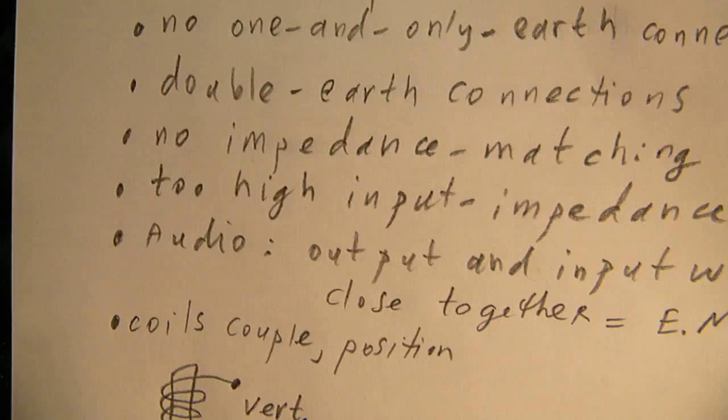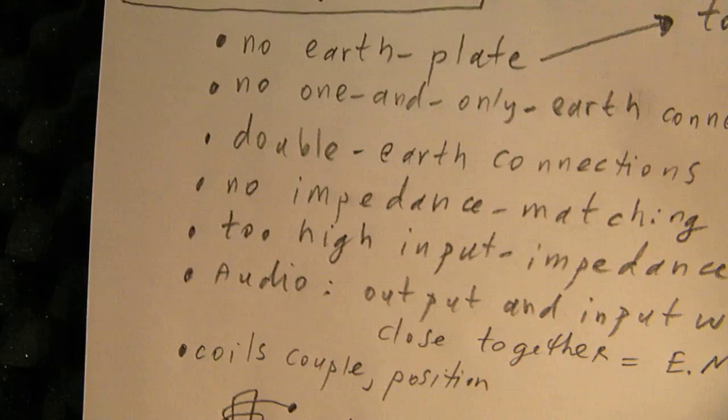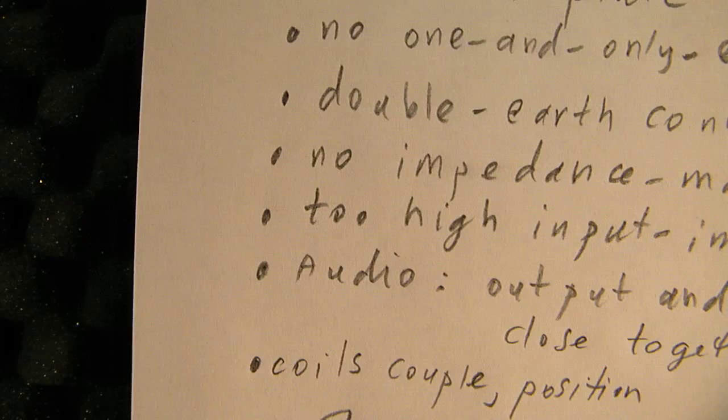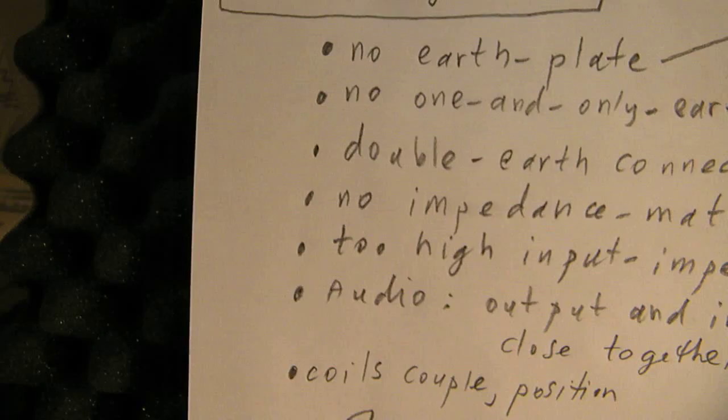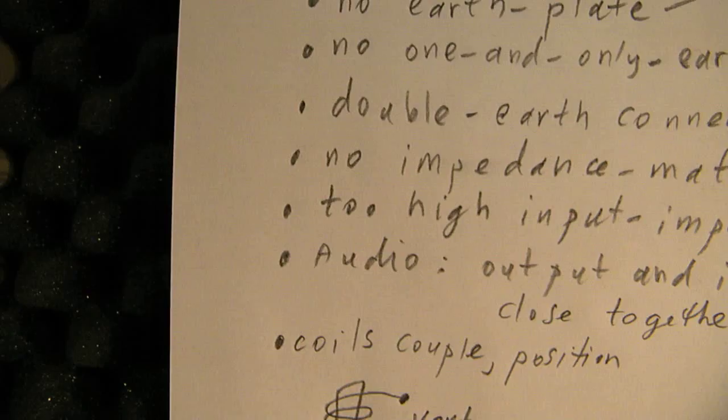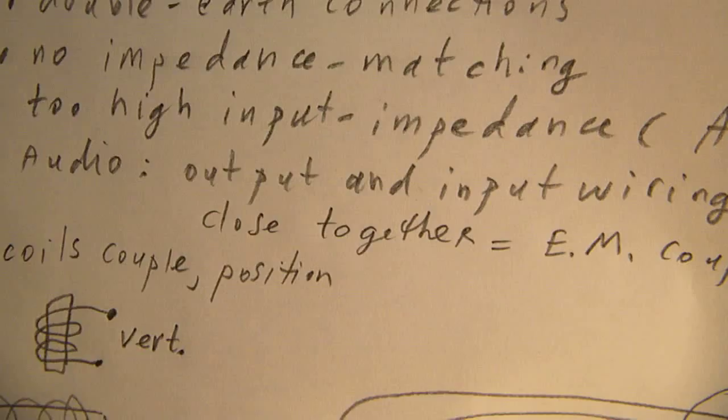A too high input impedance can also mean a problem. Say you have a field effect transistor at its gate, it could be that the impedance is so high that we get unexpected back coupling effects, and that means that your audio amplifier can start to oscillate.